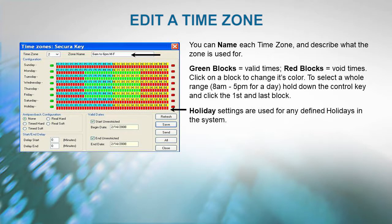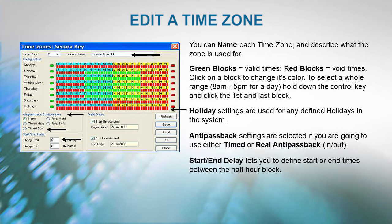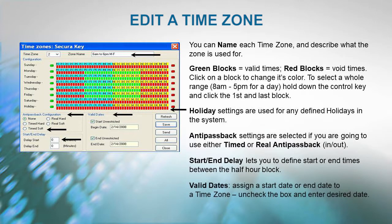The holiday settings are used for any defined holidays in the system. Anti-passback settings are selected if you're going to use either timed anti-passback or real anti-passback, in or out. Start/End Delay lets you define start or end times between the half-hour block. Valid Dates allows you to assign a start date or an end date to a time zone — just uncheck the box and enter the desired date.